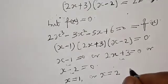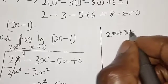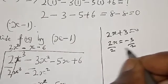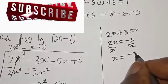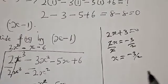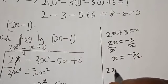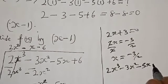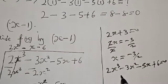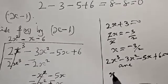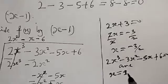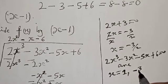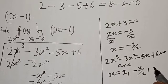Also, from 2s plus 3 equals 0, we have 2s equals minus 3. Dividing both sides by 2, s equals minus 3 over 2. Therefore the roots of the equation 2s³ minus 3s² minus 5s plus 6 equals 0 are: s equals 1, s equals minus 3 over 2, and s equals 2. That is our final answer.